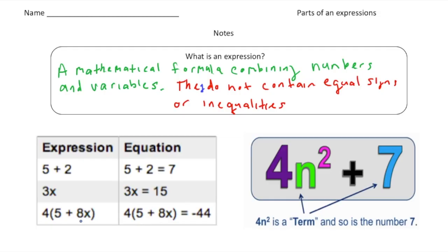Over here we have examples of equations. 5 plus 2 equals 7, 3x equals 15, 4 groups of 5 plus 8x equals negative 44. These are not expressions, these are equations. So once you're done writing down the definition, please turn the page.